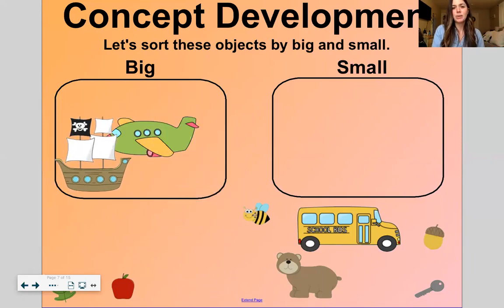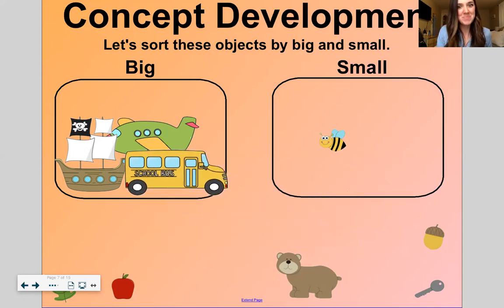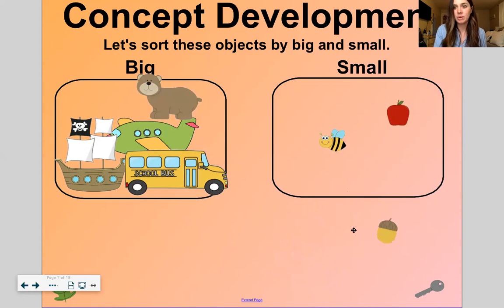What about this umbrella? Big, small. Blurt. Small. School bus. Big, small. Blurt. Big. What about this bear? Big or small? Blurt. Big. What about this apple? Big or small? Blurt. Small. What about this acorn? Big or small? Blurt. Small. What about this key? Big or small? Blurt. Small. And last hiding down here. A leaf. Big or small? Blurt. Small. Good work.